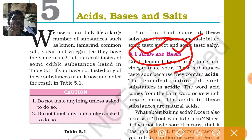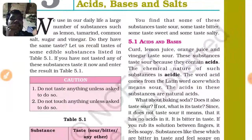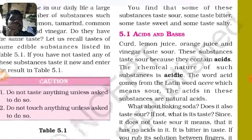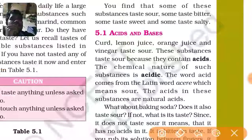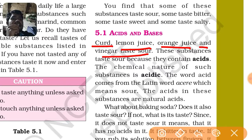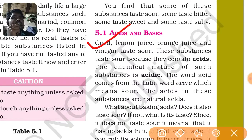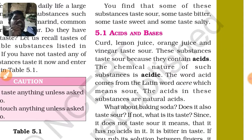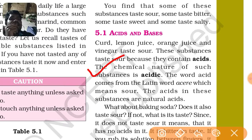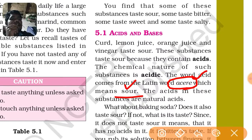Just like lemon juice, orange juice, and vinegar - these substances taste sour. If you test these substances they will taste sour, which means they are acidic. So acids are the substances which taste sour. Their chemical nature - generally acid comes from the Latin word 'acidus', which means sour.